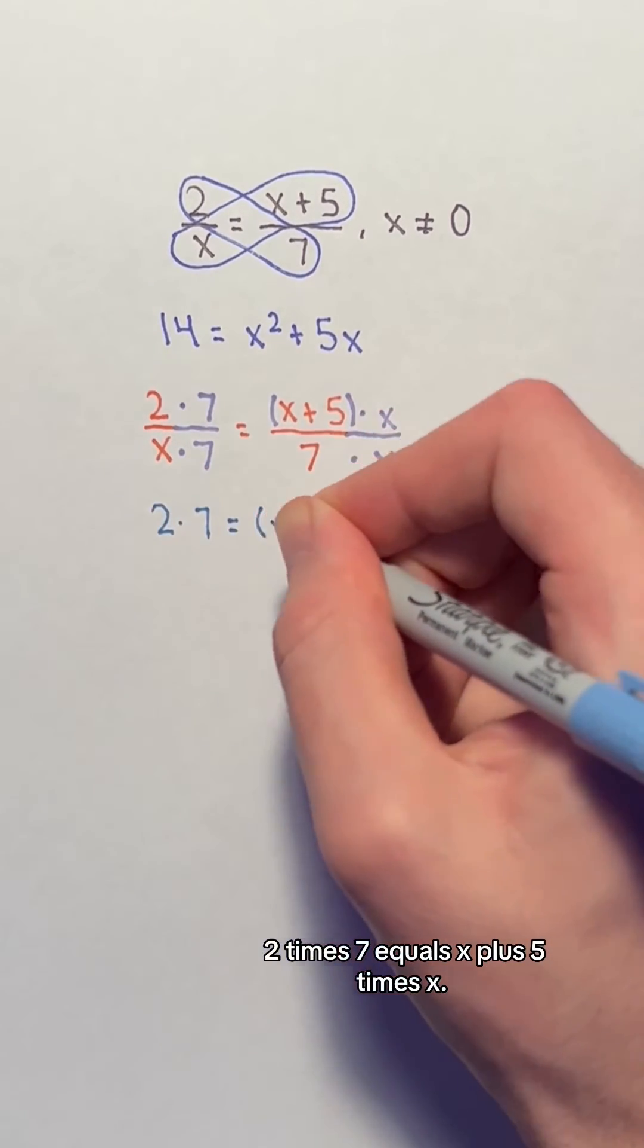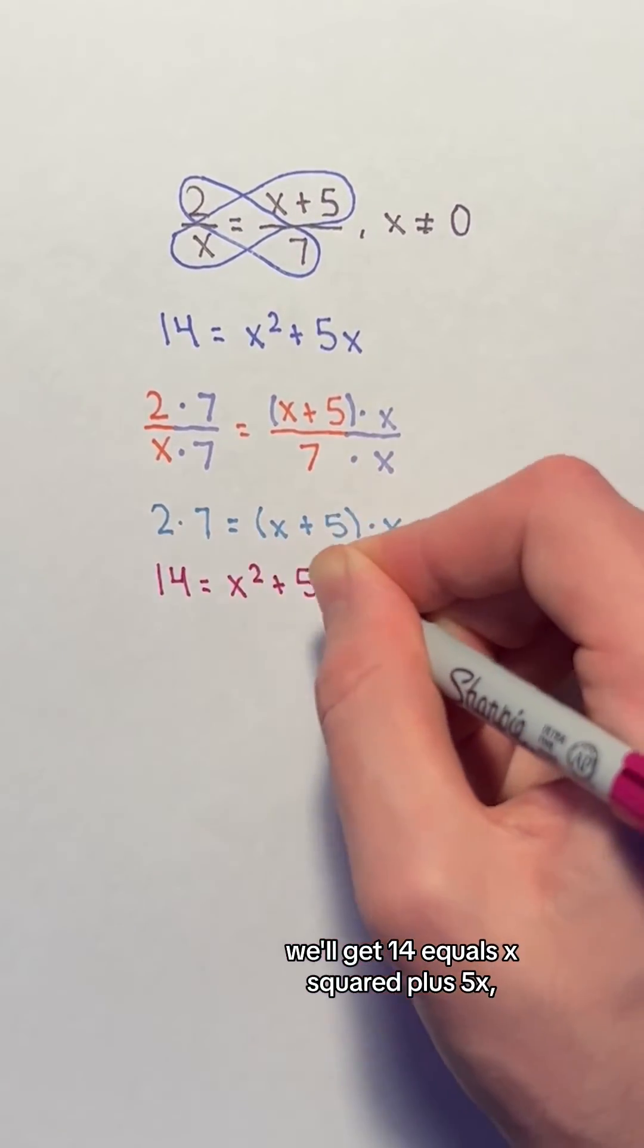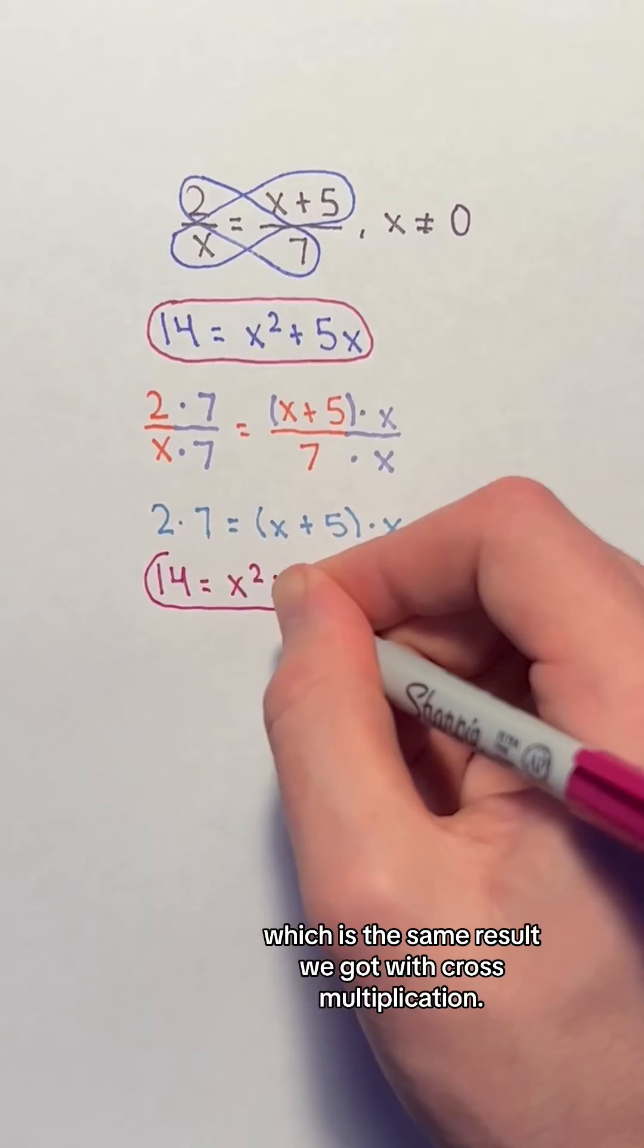2 times 7 equals x plus 5 times x. If we simplify, we will get 14 equals x squared plus 5x, which is the same result we got with cross multiplication.